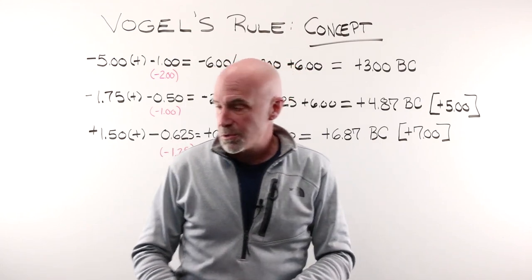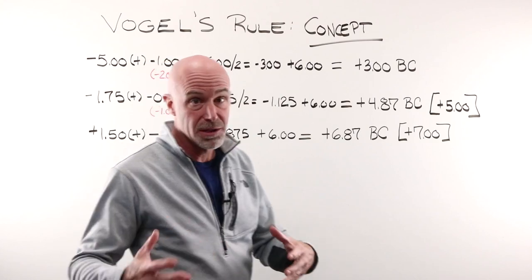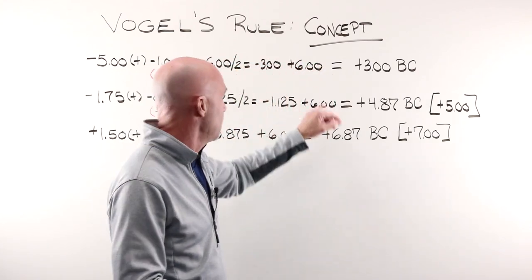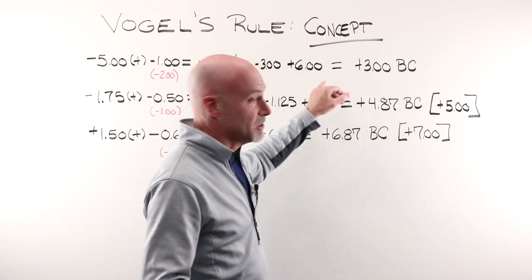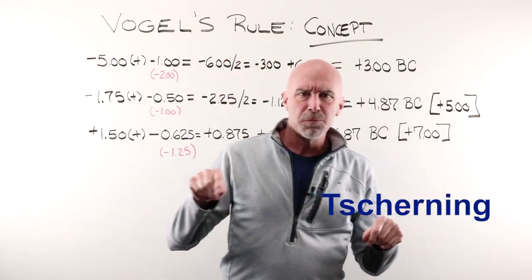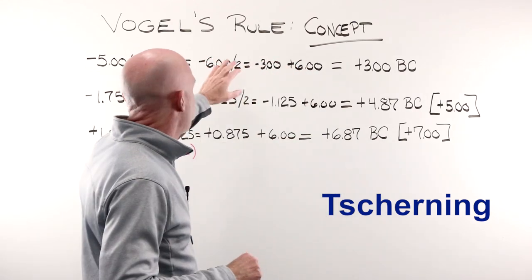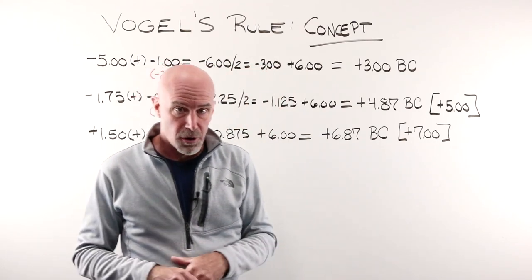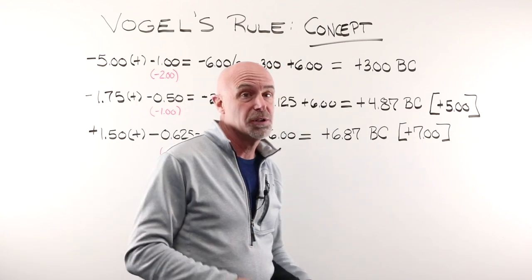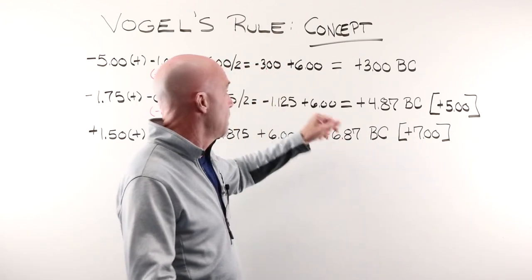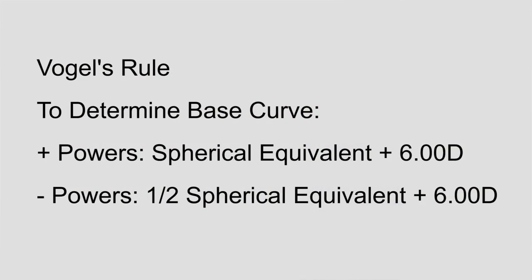We can use Vogel's rule, which is what we're gonna do, that says that you always want to get the base curve as close to plus six as possible. Again, back in the day, glass lenses, simple two-axis surfacing, that was a great rule. You can also use Shearing's Ellipse, and of course there are base curve charts as well. Conceptual, certainly going to want to know this. I've got a lot of this stuff on the OpticianWorks website.